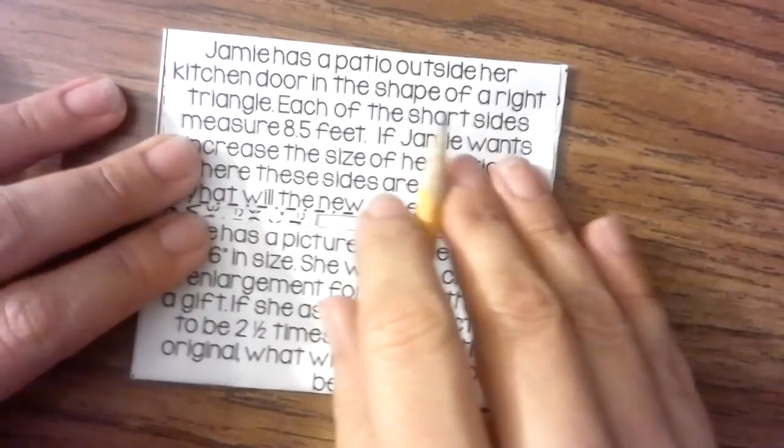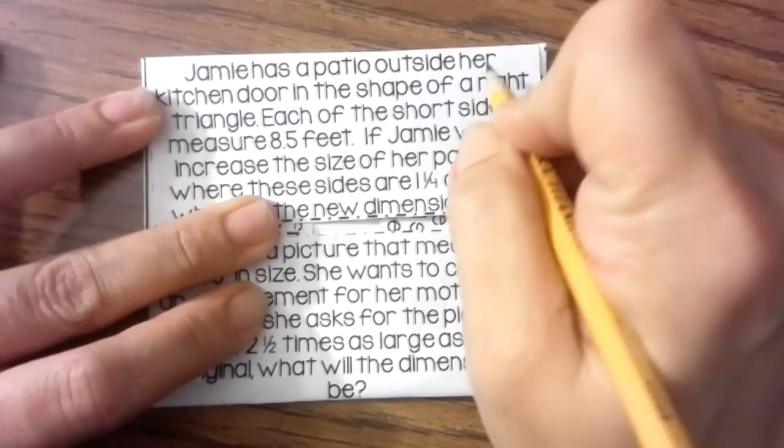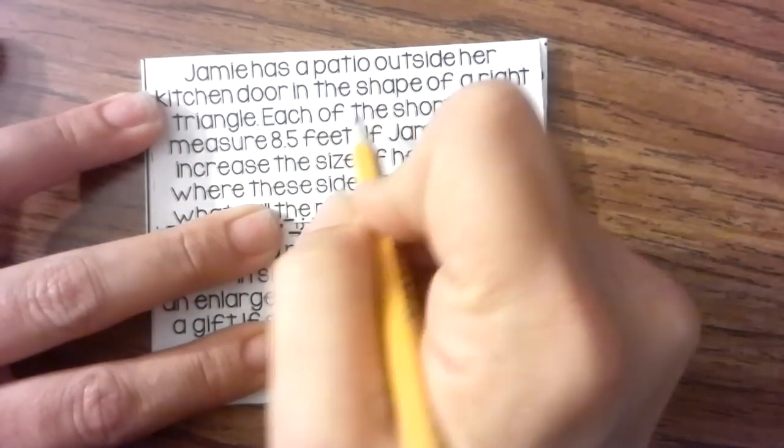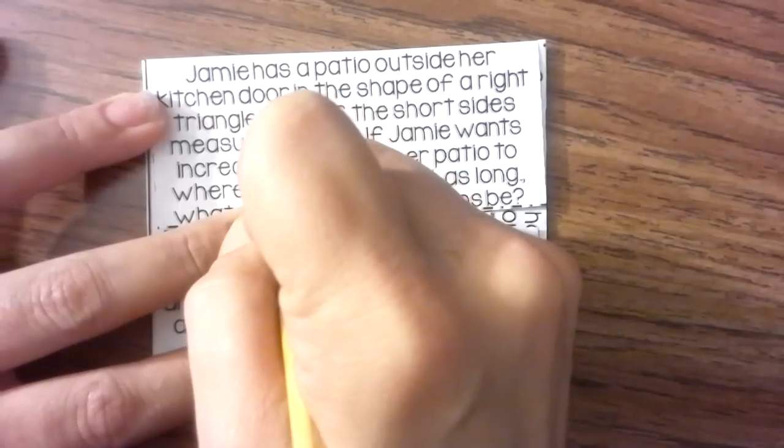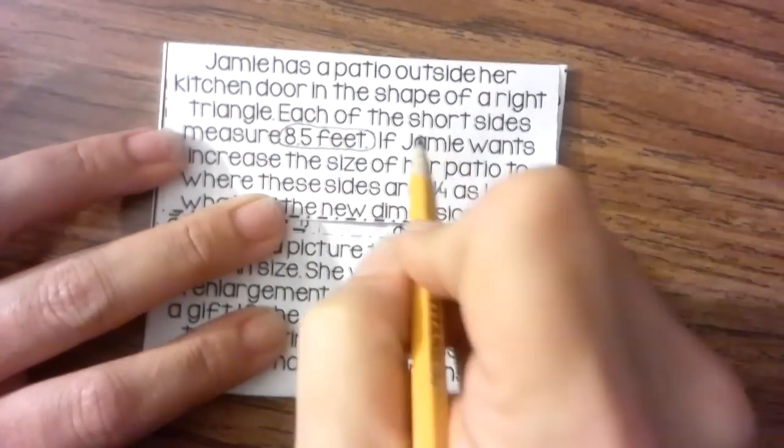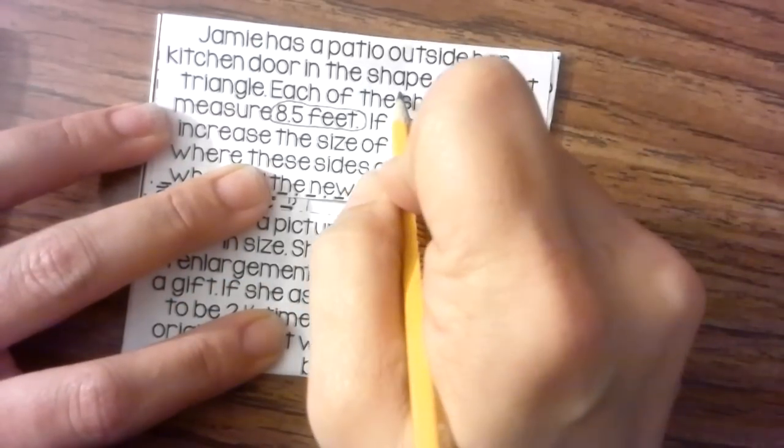So I know it's a right triangle. Each of these short sides measure 8.5 feet, and those are the short sides.